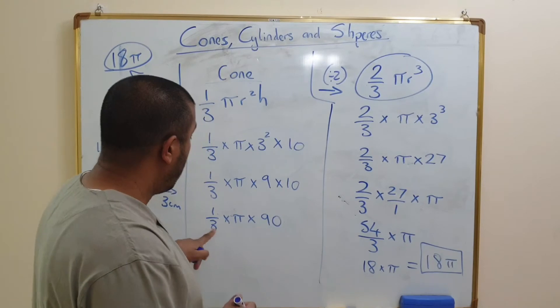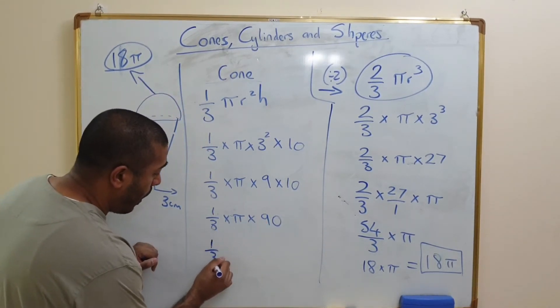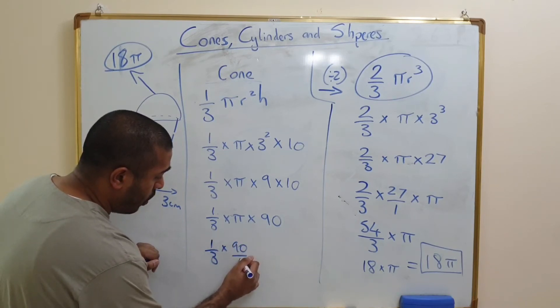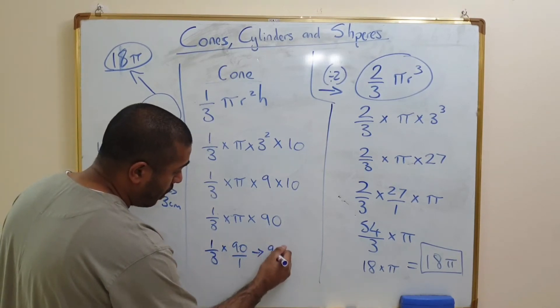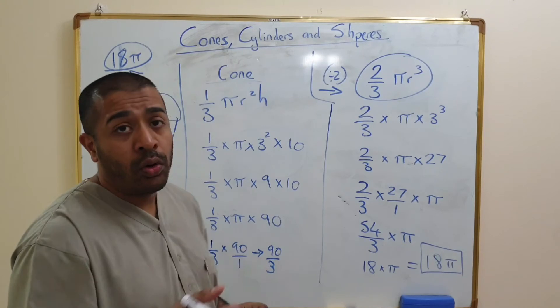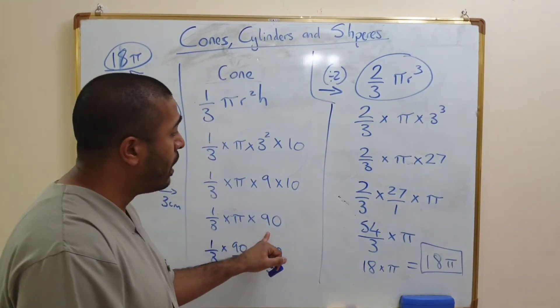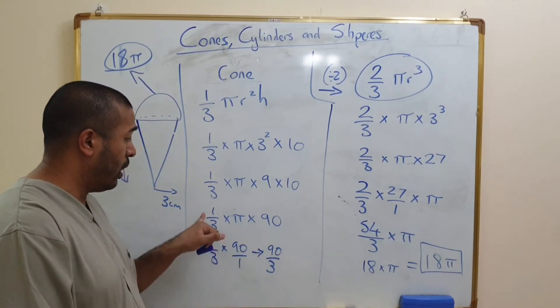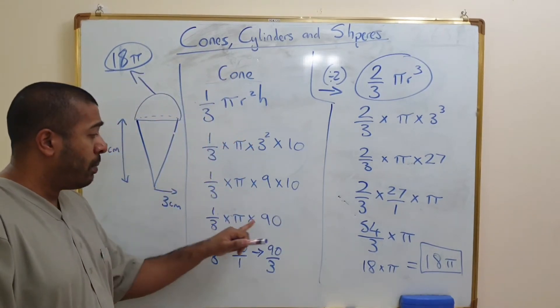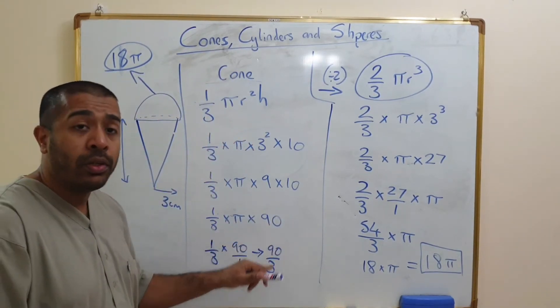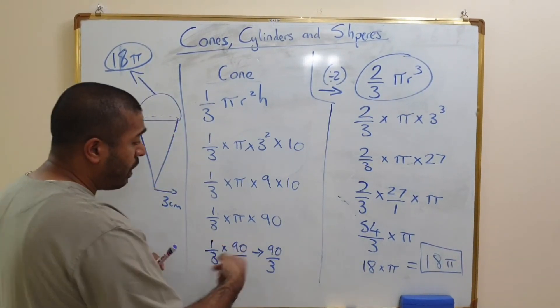Similar thing that we did on this side, that 90 is going to times by 1/3. Now there's two ways of doing this. You can do 1 times by 90 over 1, which is going to give you 90 over 3. Or if you know your rules of fractions, if you're multiplying a fraction by a whole number, technically you can divide. If you're multiplying the fraction and it has a numerator of 1 by a whole number, you can just divide by the denominator. It's up to you, it's just whichever you remember. So 90 divided by 3 is 30.